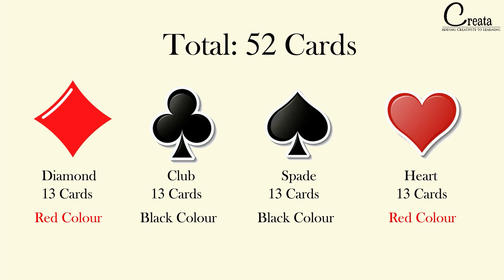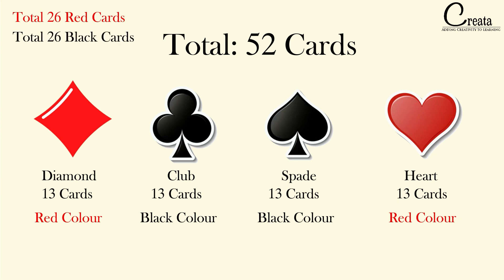So we are having diamond and heart as red in color, and club and spade as black in color. So if I ask you how many red colored cards are there, the answer will be there will be total 13 diamond red cards and 13 heart red cards. So in totality, there will be 26 red cards. And also there will be 26 black cards, that is 13 club cards and 13 spade cards.